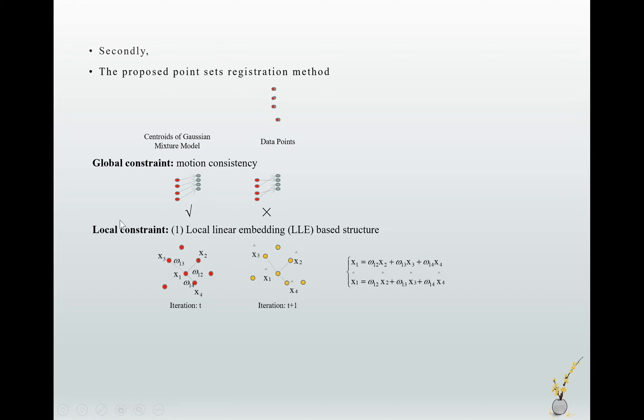The second constraint is a local constraint: the local linear embedding theory. This theory comes from the data dimensional reduction problem. This theory says in a high dimensional space, the data, just like x1, can be represented by its neighbors as a linear combination, just like the first line in this formula.